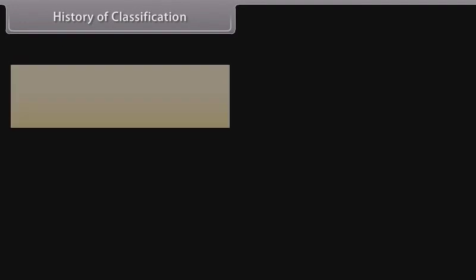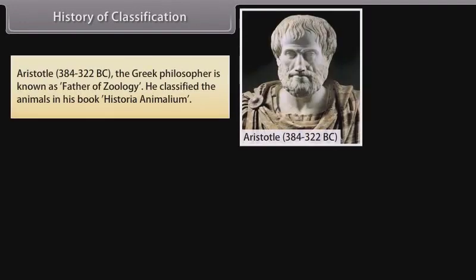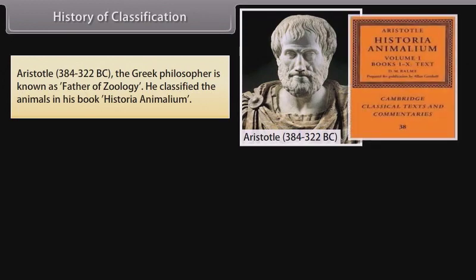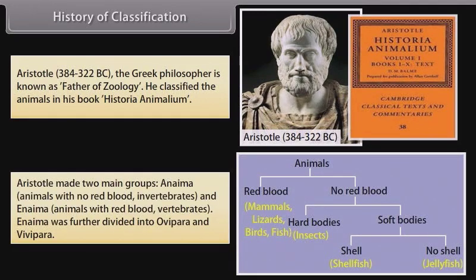History of classification: Aristotle (384–322 BC), the Greek philosopher known as the father of zoology, classified animals in his book Historia Animalium. He made two main groups: Anaima, animals with no red blood (invertebrates), and Enhaima, animals with red blood (vertebrates). Anaima was further divided into ovipara and vivipara.